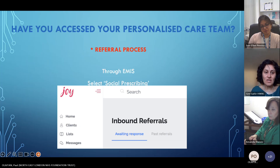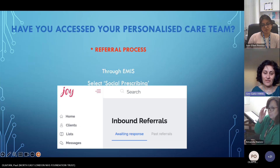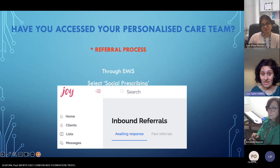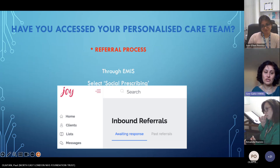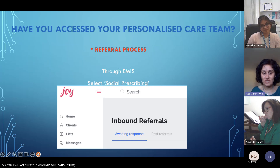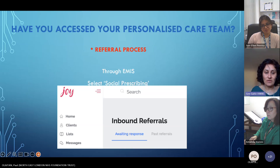How many of you have accessed your personalised care team or are working with them? Pop it into the chat box. It's very easy to access — the referral process is through EMIS or System One. You select social prescribing and you'll be onto the Joy platform, which is the personalised care platform where we receive referrals and signpost them to the appropriate member of the team.